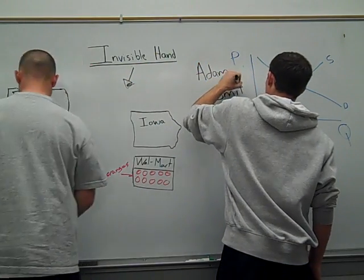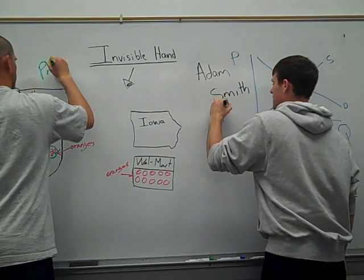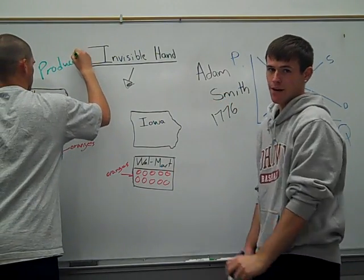The invisible hand theory was created by Adam Smith in 1776 in his book entitled The Wealth of Nations.